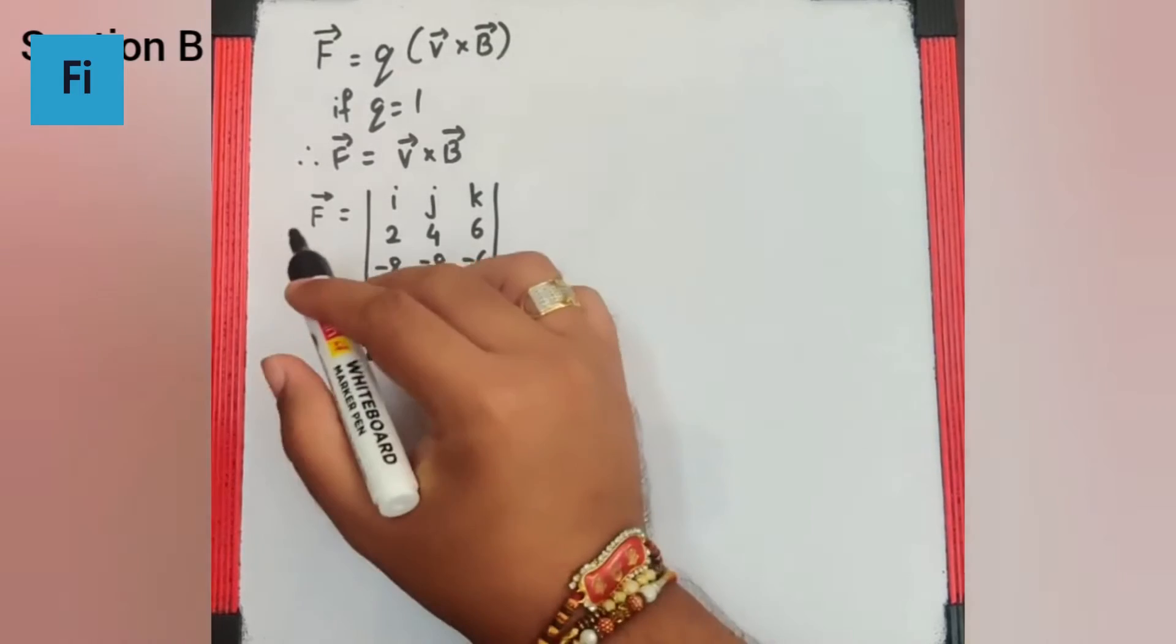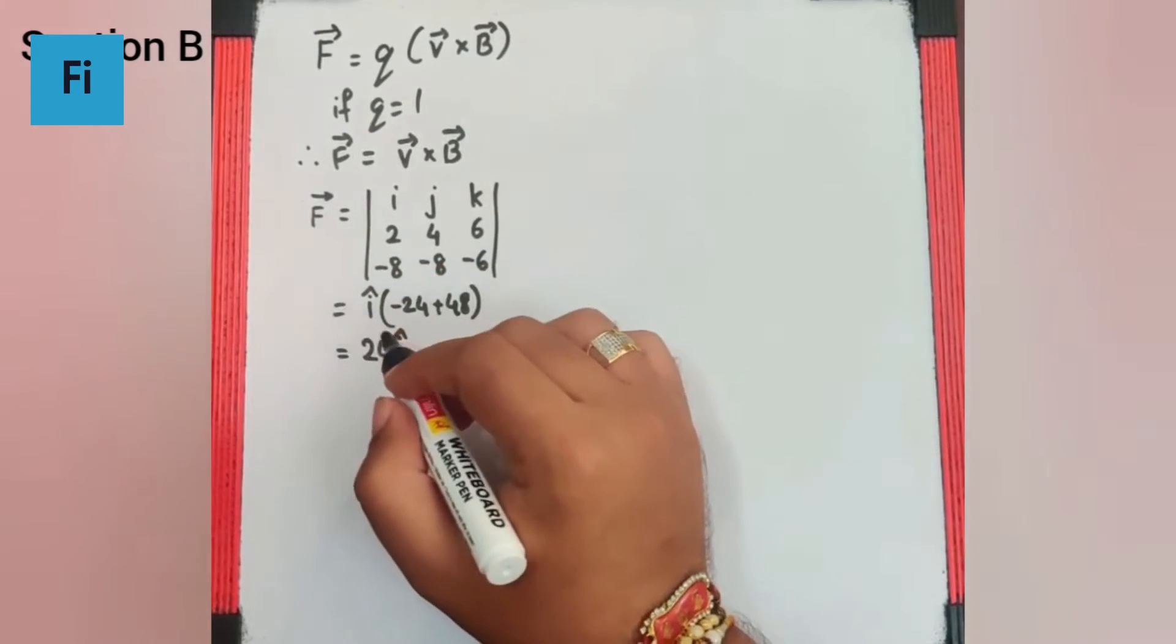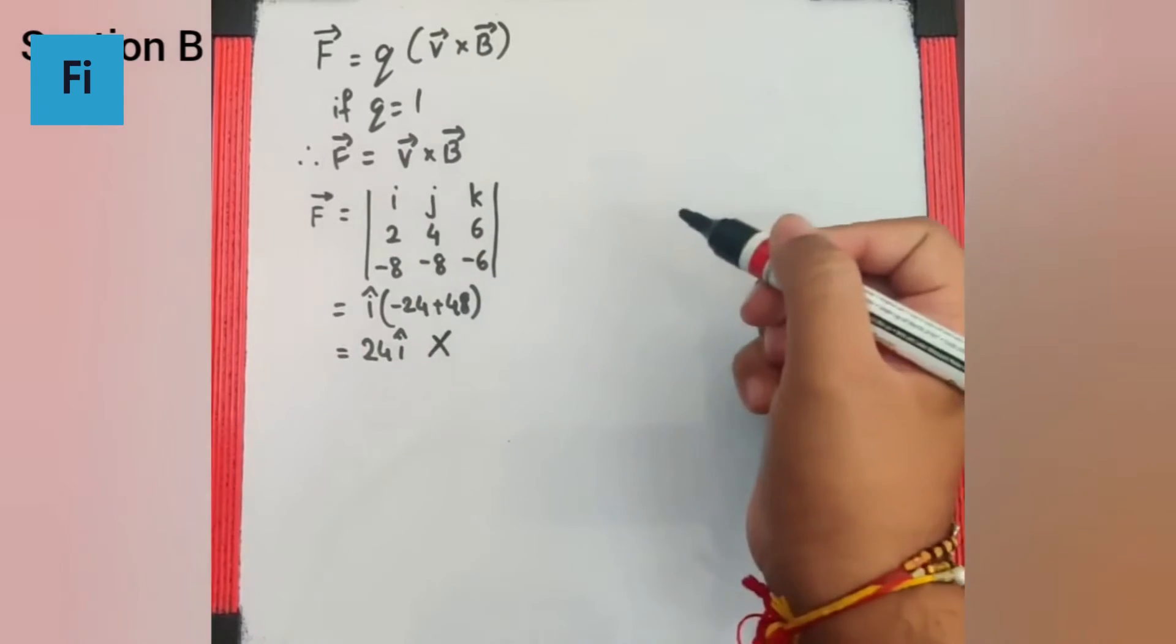But F bar has the first i cap component as 4i cap, so this is definitely wrong.